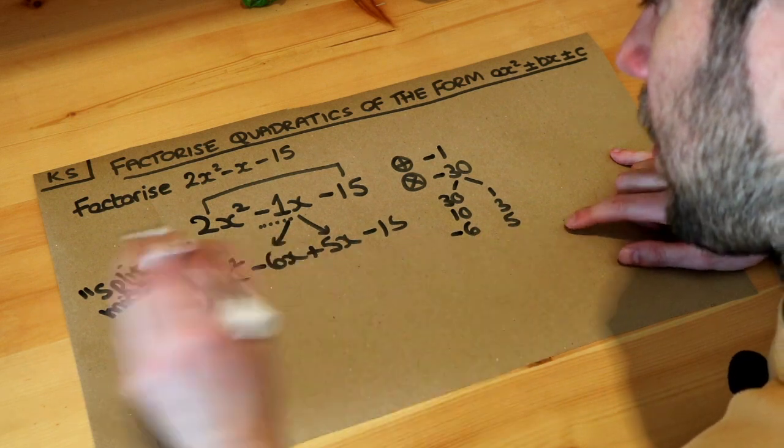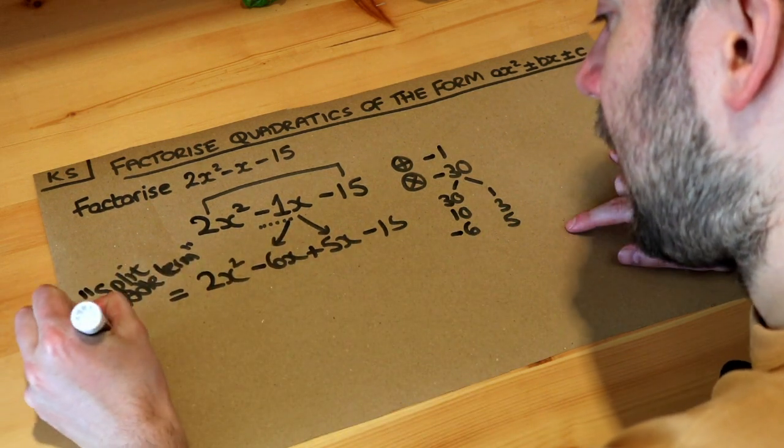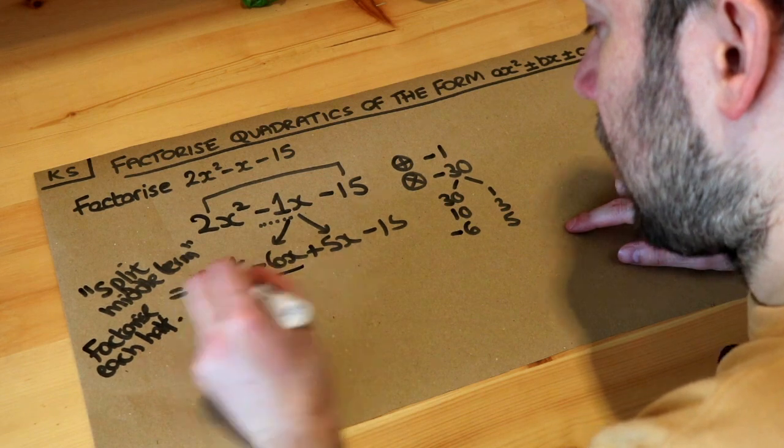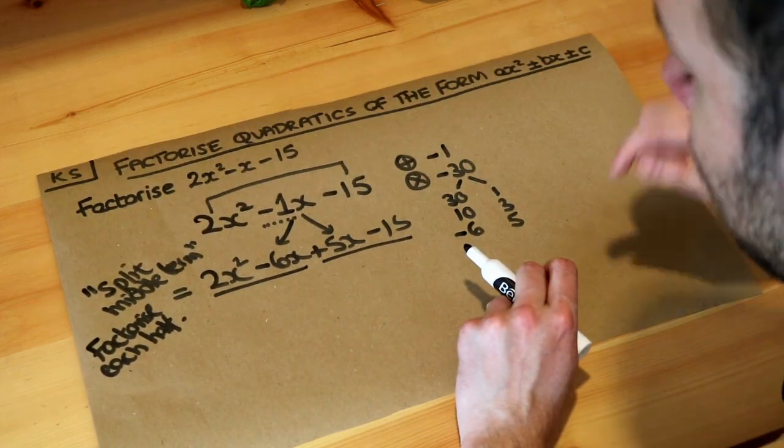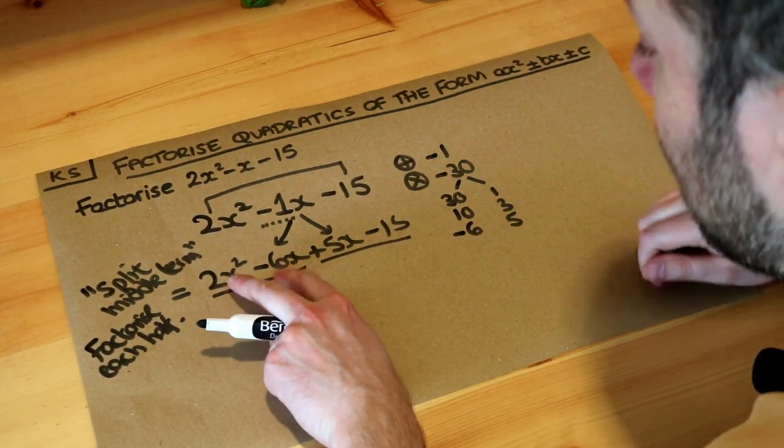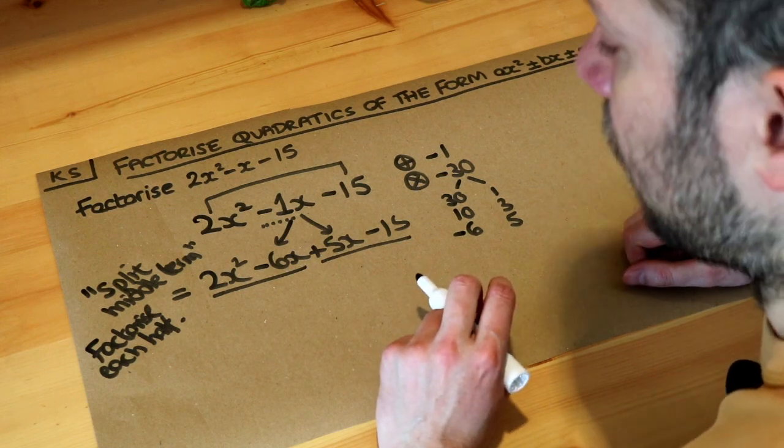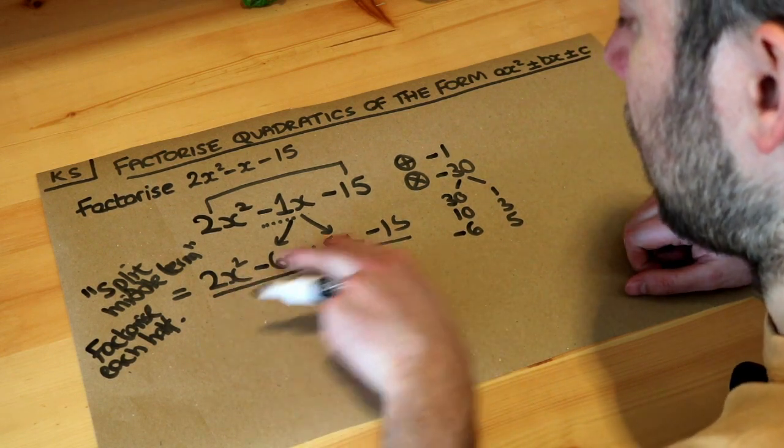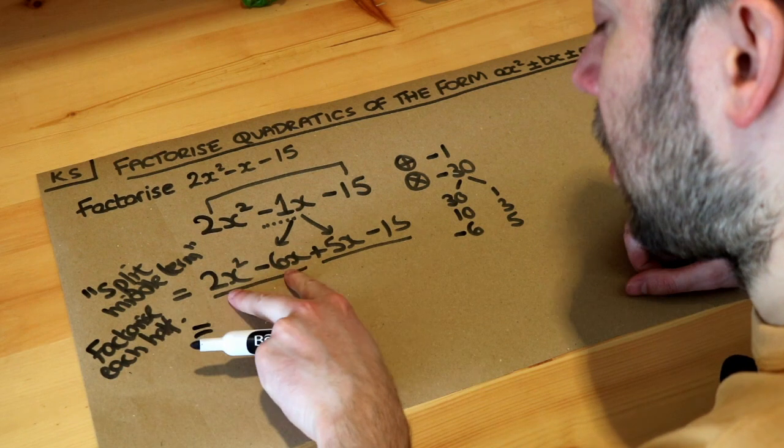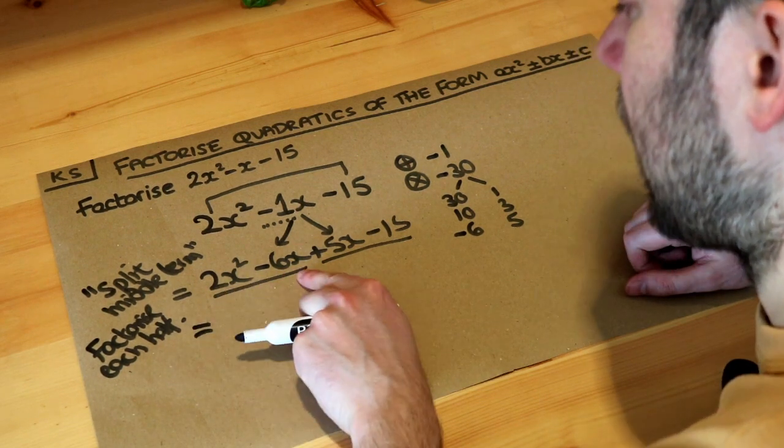But we can use this to then factorise. So the next step is to factorise each half. So I'm going to underline this half and underline this half. And then we look for common factors in each pair of terms here. And we look for common factors in each pair of terms here. So let's look at this first half.